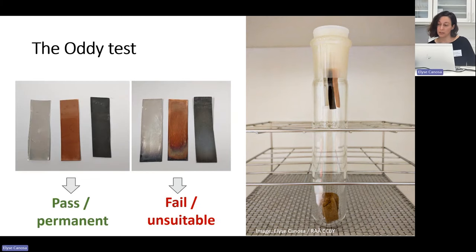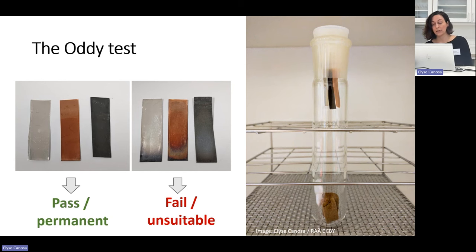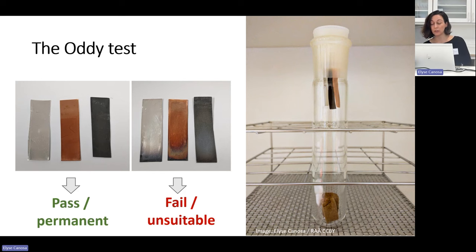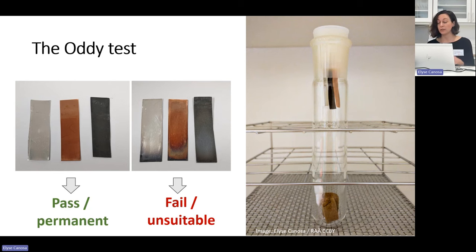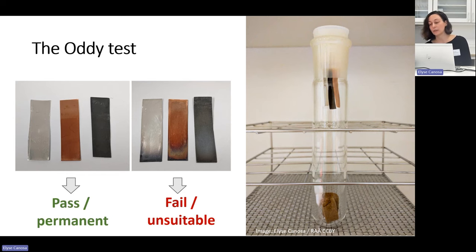After four weeks, the coupons are removed from the vessel and visually inspected for corrosion. If there is visible corrosion on one or more of the coupons, the material has produced an undesirable emission and does not pass the Oddy test, indicating it should generally not be used near cultural heritage objects. Typically there are three types of assessment grades: pass, if there is no corrosion or simply some oxidation layers; temporary, if the coupon shows very light corrosion; and fail, if there is moderate or heavy corrosion. You might also encounter terminology such as 'permanent' for materials that pass, or 'unsuitable' for materials that fail.